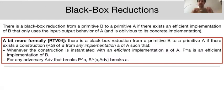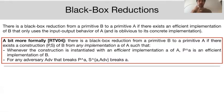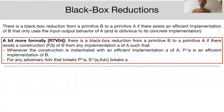Slightly more formally, there is a black box reduction from primitive B to primitive A if there exists a construction of B — a pair of algorithms P and S — such that given any efficient concrete implementation of A, P, which internally uses oracle access to A, is an efficient implementation of B. And there is a reduction S that transforms any adversary breaking primitive P into an adversary against A.